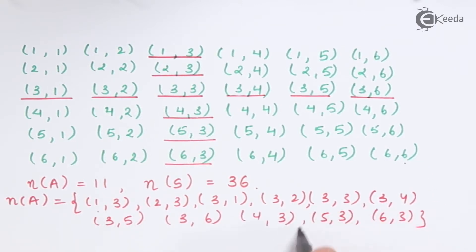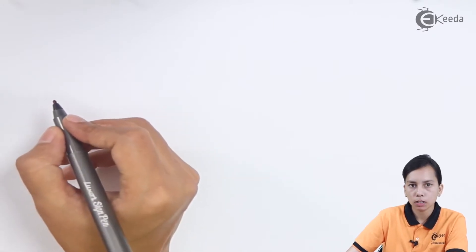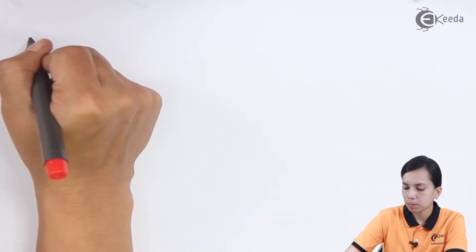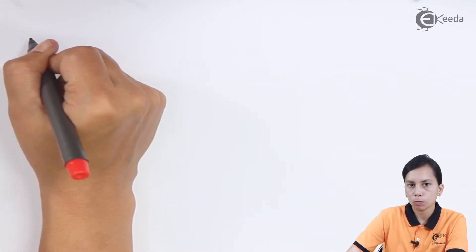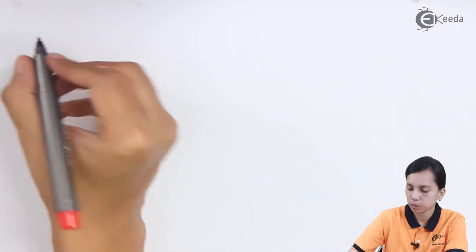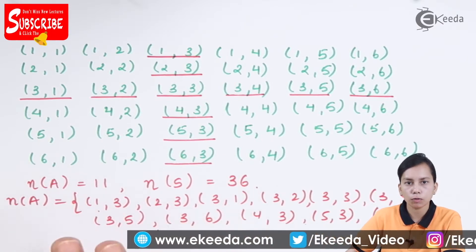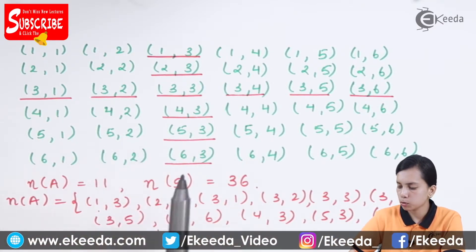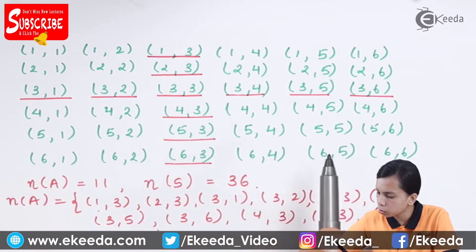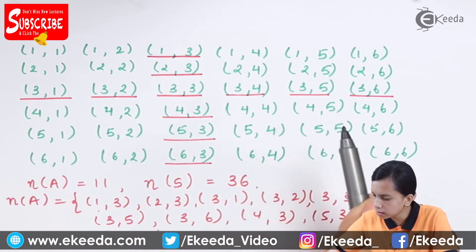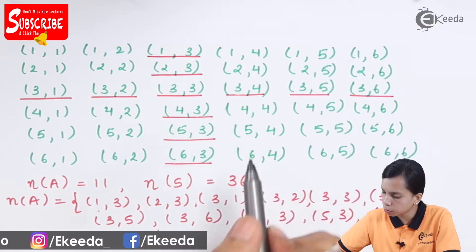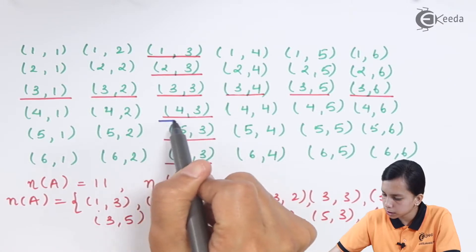Next we will find out the possible combinations for event B. B is the event when we are getting the sum of the two numbers as seven. Again taking a look at all the sample spaces, I'm using a blue marker for denoting the sum as 7. So I will get (3,4), (3,4)...